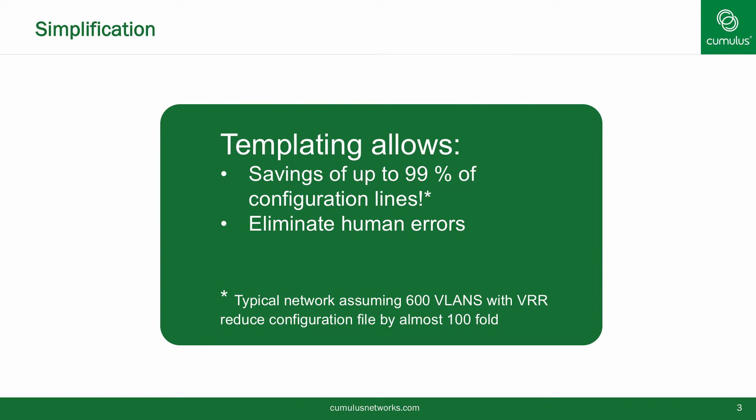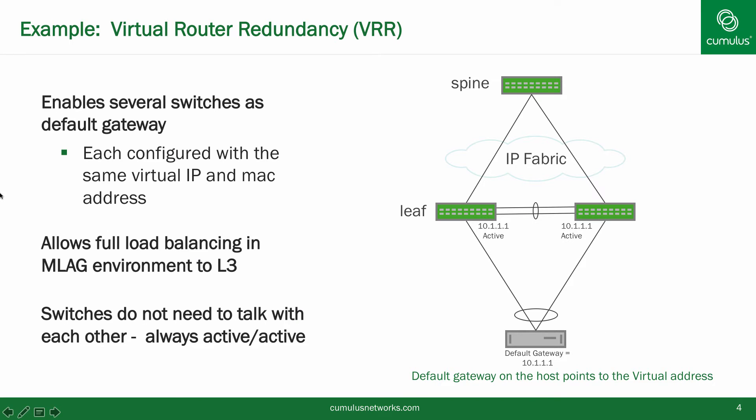In fact, in a real customer environment, we have reduced the configuration lines by over 99%. Let's take virtual router redundancy as an example. As opposed to VRRP, Cumulus VRR allows many active default gateways. All default gateways use the same MAC address and IP gateway address and forward the traffic off the subnet to allow for full load balancing, whether you have MLAG with two default gateways or you're connected to 100 default gateways.